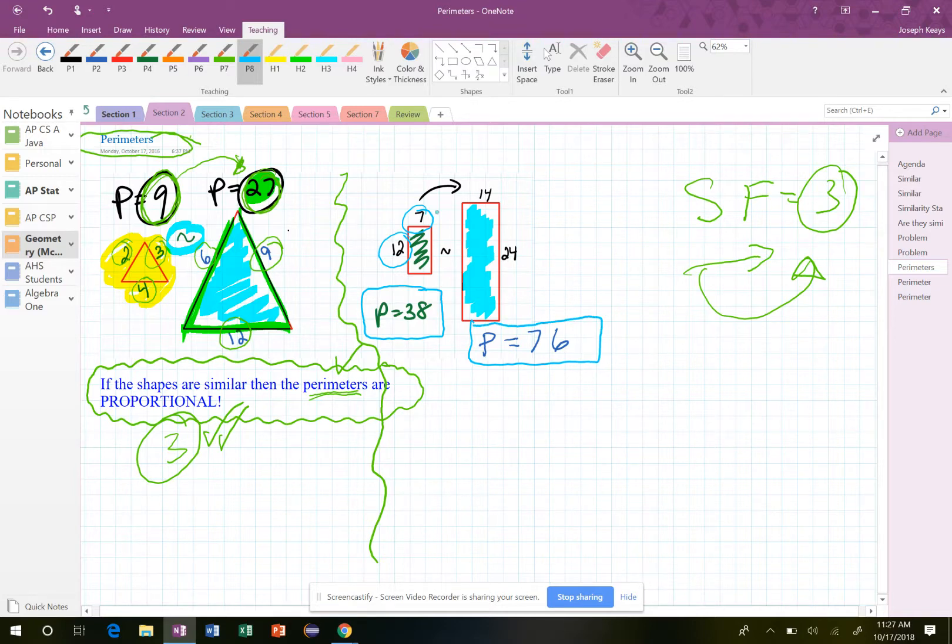Well, how can we find the perimeter of the other one? Well, if you notice, the scale factor here is 2. Small to small, medium to medium.